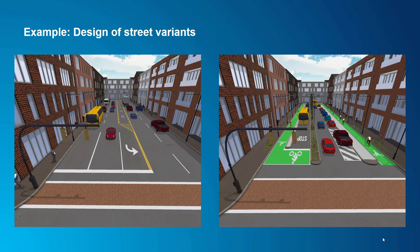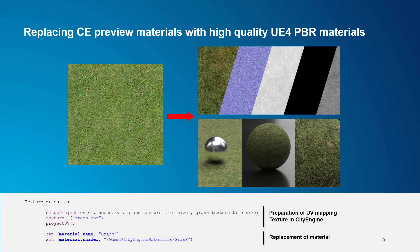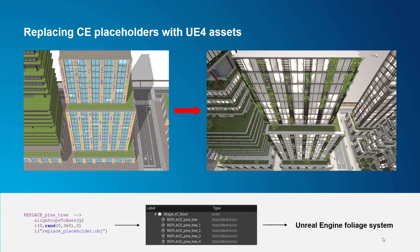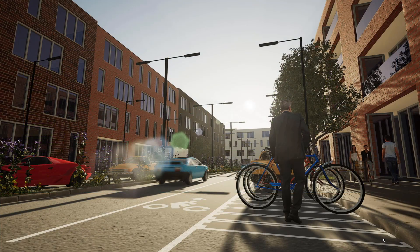Here we have a CityEngine model for a design of different street variants — on the left-hand side a number of lanes, on the right-hand side the same street with added cycling routes, so basically two scenarios within CityEngine. When we bring these into a game engine, we first replace preview materials with high-quality Unreal Engine PBR materials during the data prep process. Similarly, we can use the replacement process to replace placeholders with high-quality Unreal Engine assets — for instance vertical plants on buildings — using the Unreal Engine foliage system for high-performance graphics output. After these replacement processes, we already get very high-quality and realistic imagery.